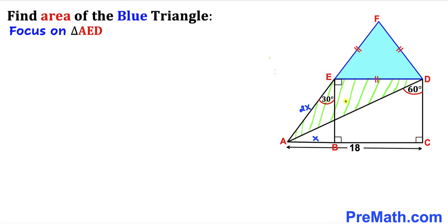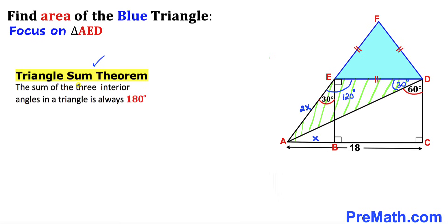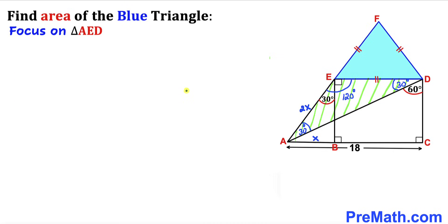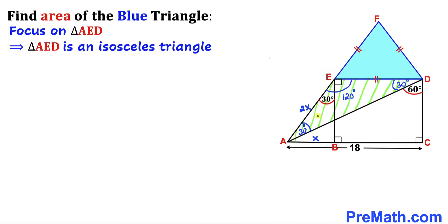Here's our next step. Let's focus on triangle AED. We know this is a 90-degree angle and this is 30 degrees, so this angle has got to be 120 degrees. Furthermore, we know this is a 90-degree angle and this is 60 degrees, so this angle has got to be 30 degrees. Recalling the triangle sum theorem, we know one angle is 30 degrees and another is 120 degrees, so therefore the third angle has got to be 30 degrees. We can see that in triangle AED, these two angles are congruent.